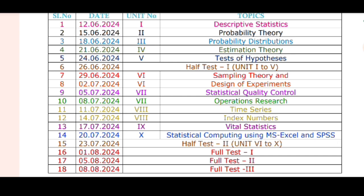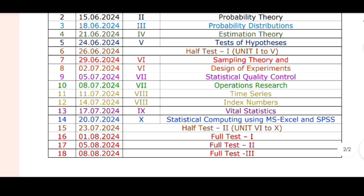Unit No. 8: Time Series. Unit No. 7, July 11: Time Series. July 14: Index Numbers. July 17: Vital Statistics. July 20 and July 26: Statistical Computing using MS Excel and SPSS. Unit No. 6. Half Test No. 2.